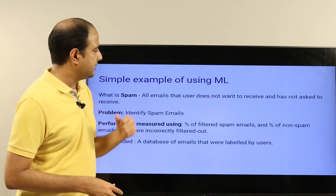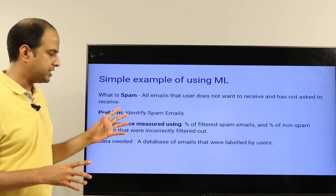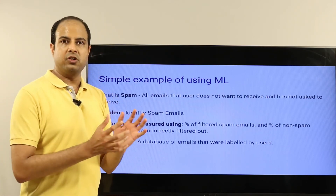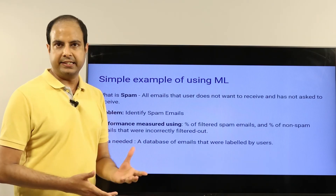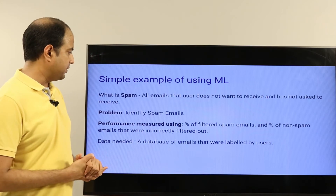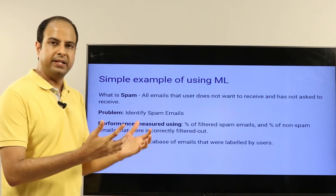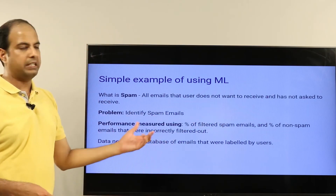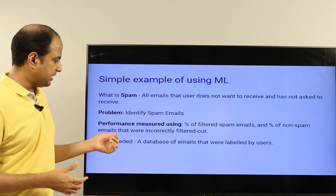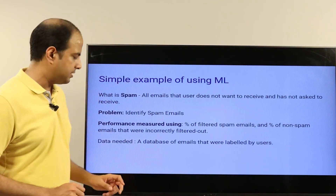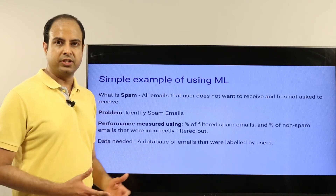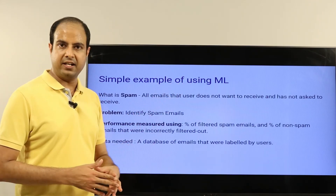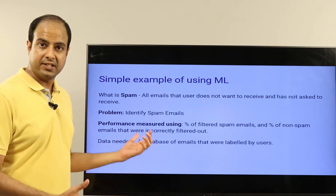Spam refers to all emails that a user does not want to receive or has not asked to be delivered. The problem is to identify spam emails. Machine learning models use a reasonable amount of labeled training data to learn a classifier that accurately predicts whether an email is spam or not. Accuracy is measured in terms of percent of filtered spam emails and percent of non-spam emails incorrectly filtered out. Supervised machine learning models need a database of emails labeled by users — perhaps a thousand spam and a thousand non-spam — so the classifier can do case-based learning and come up with a good model.